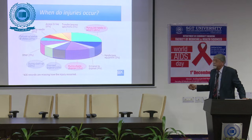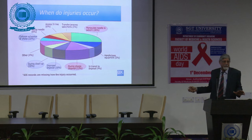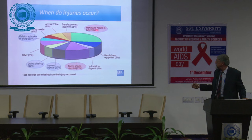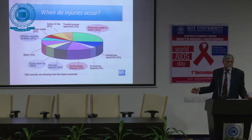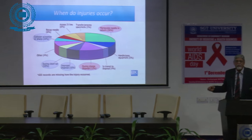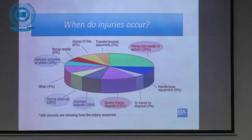Where do injuries happen? The maximum occur in the inpatient department — as much as 40% of cases — followed by operating rooms. When do they occur? The maximum number of injuries happen during manipulation of the needle in the patient, as much as 26%, followed by during sharp disposal at around 13%, with other situations including improper disposal during cleanup or collision with a colleague.